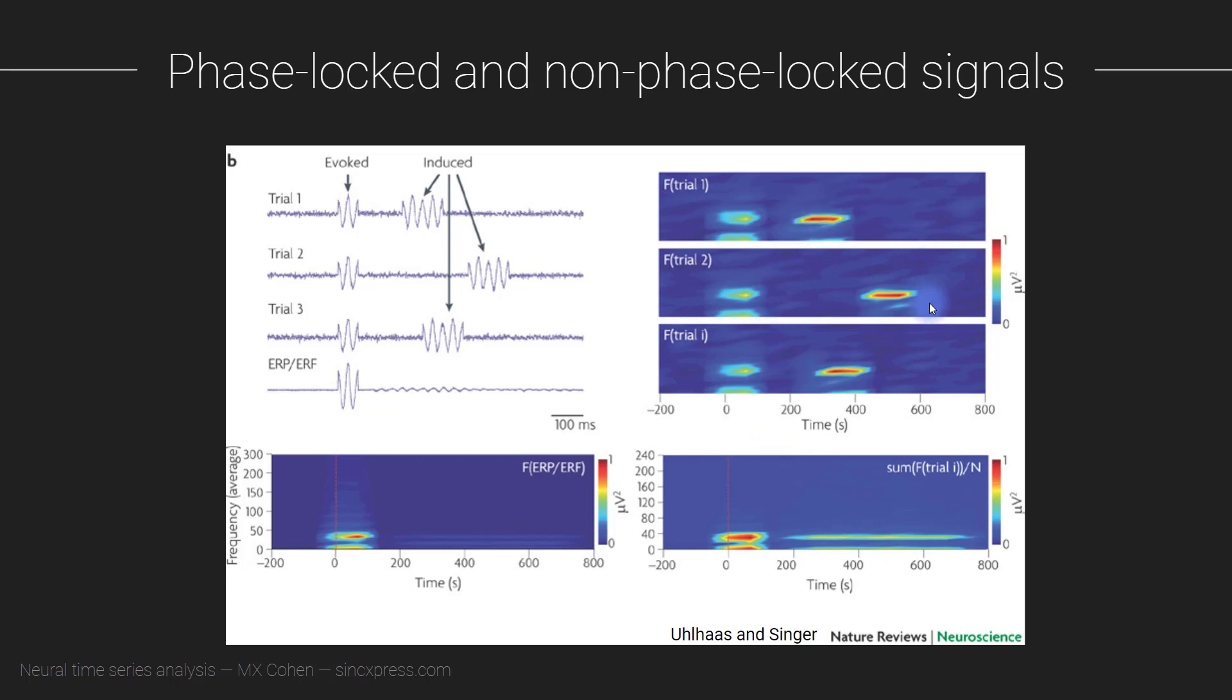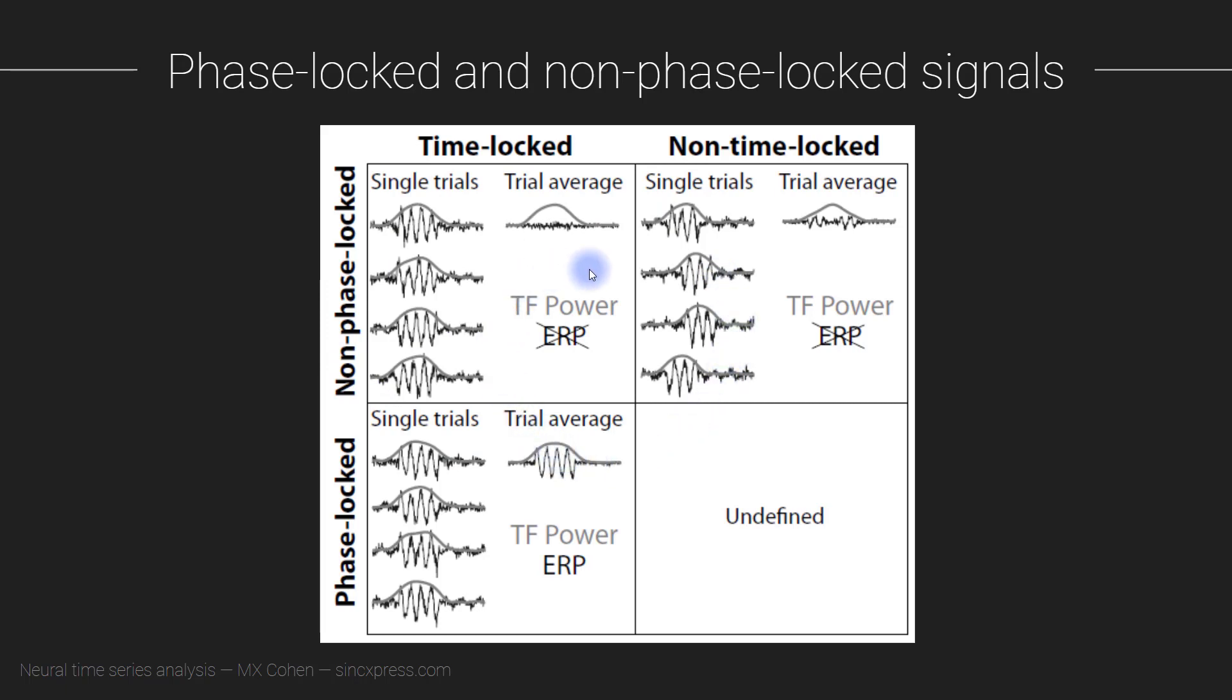So by applying these time frequency analyses we are extracting more information from the signal than what we would get just from the ERP. So here you see a table illustrating what you can measure when activity is time locked versus non-time locked and phase locked versus non-phase locked. Now this distinction between or these terms phase locked and non-phase locked and time locked and non-time locked these are terms that are only really useful to discuss when you have a trial based experiment design. So that is an experiment design where there is something that you can call a time zero.